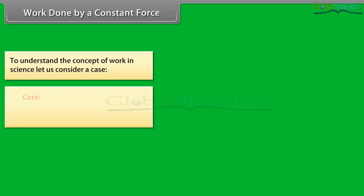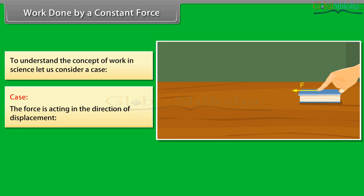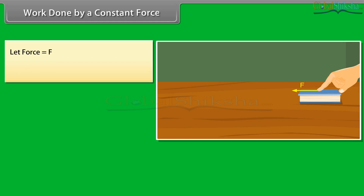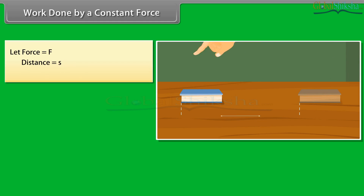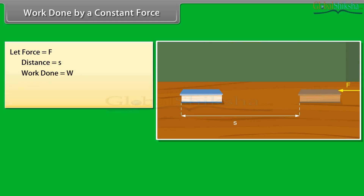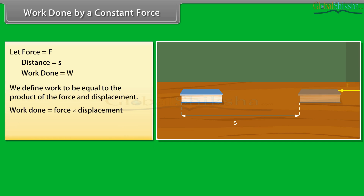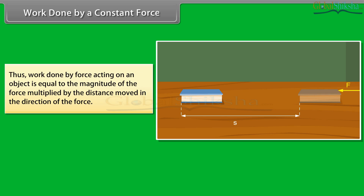Work done by a constant force. To understand the concept of work in science, consider a case where the force is acting in the direction of displacement. Let a constant force F act on an object, and let the object be displaced through a distance S in the direction of the force. We define work to be equal to the product of force and displacement. Work done W is equal to force F into displacement S. Thus, work done is equal to the magnitude of the force multiplied by the distance moved in the direction of the force.